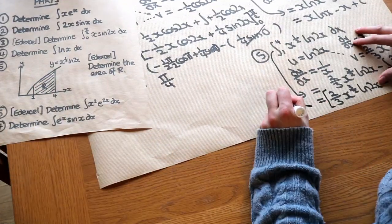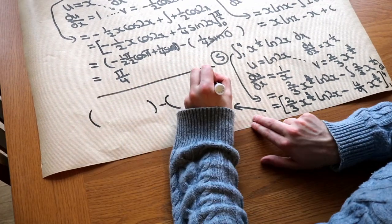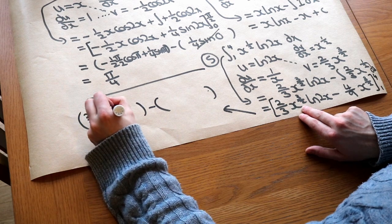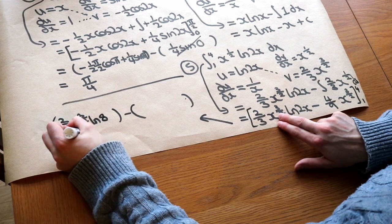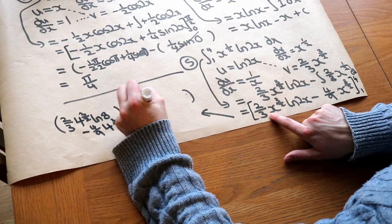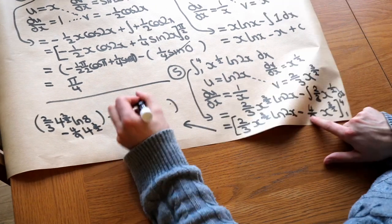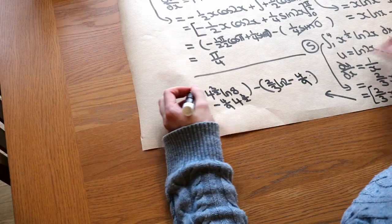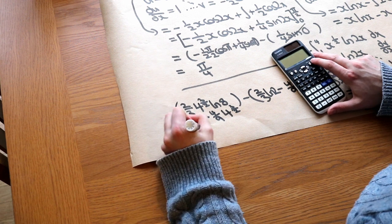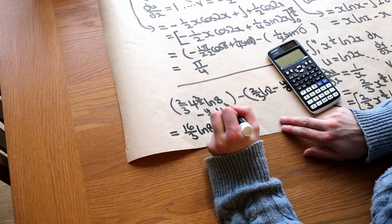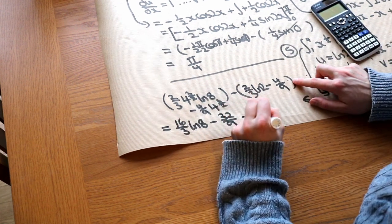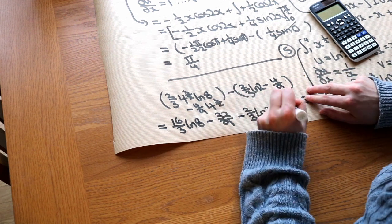Substituting x = 4: ⅔·(4^(3/2))·ln(8) − (4/9)·4^(3/2). Substituting x = 1: ⅔·1·ln(2) − (4/9)·1. Now 4^(3/2) = 8, so 8·(⅔) = 16/3, giving (16/3)·ln(8) − (4/9)·8 = 32/9. Then minus ⅔·ln(2) minus (−4/9), which becomes plus 4/9.